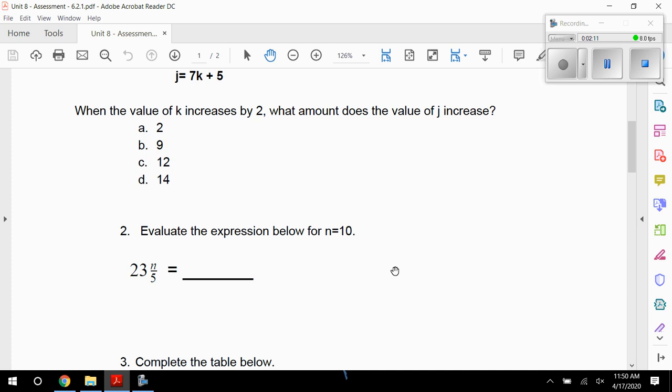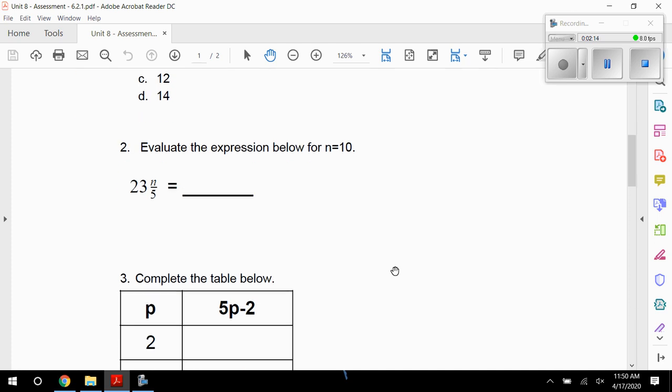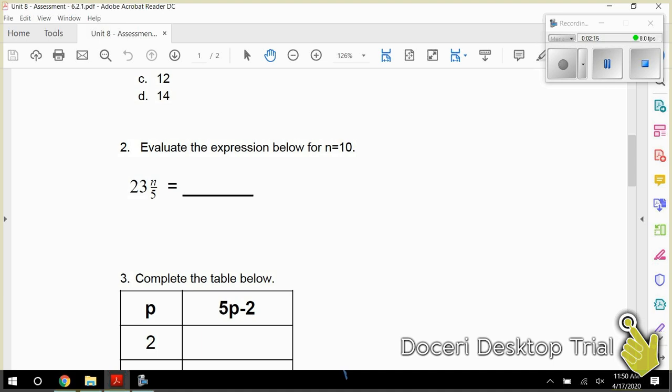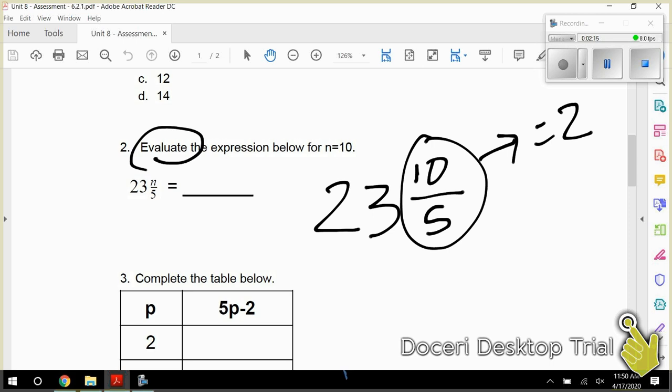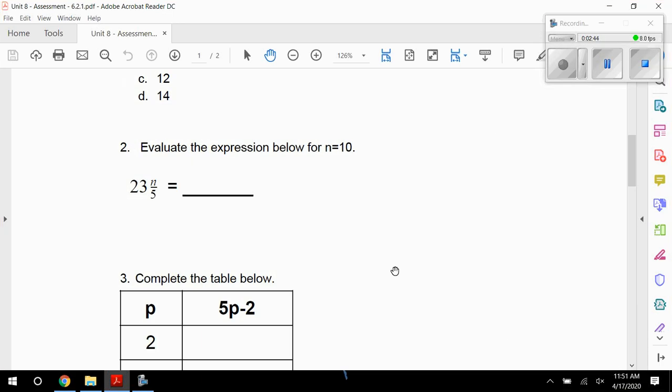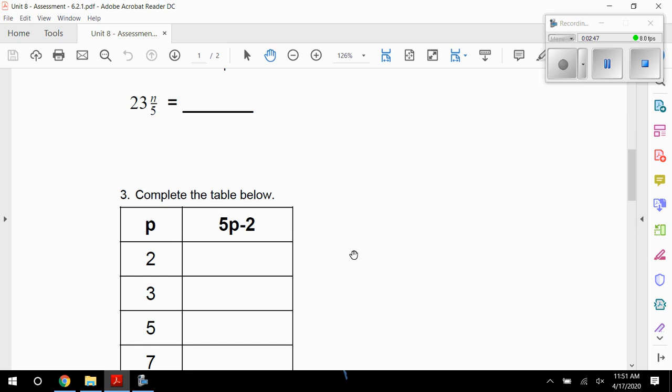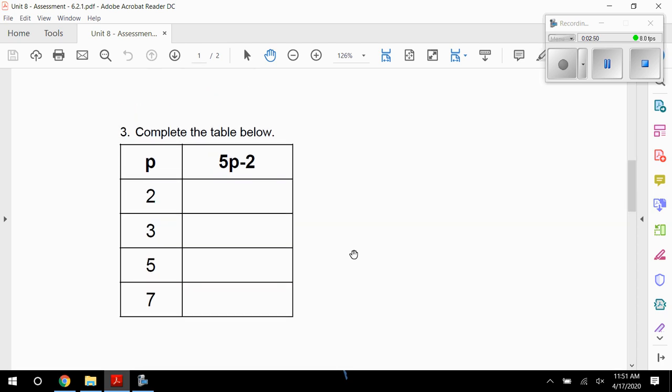Then we look at number 2. It says evaluate. Evaluate means solve. So we're just going to do 23 plus 10 over 5. Well, 10 over 5 equals 2. 10 divided by 5 is 2. So 23 plus 2 is 25. So the answer to number 2 is 25. Again, you should have already done this test. Right now, you're just kind of going over it with me. If you didn't know how to do one of them, that's okay. Hopefully now you're learning how to do it.